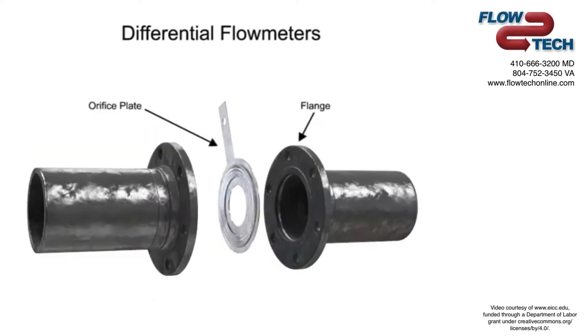The differential flow meter, whether Venturi tube, flow nozzle, or orifice plate style, is an inline instrument that is installed between two pipe flanges.